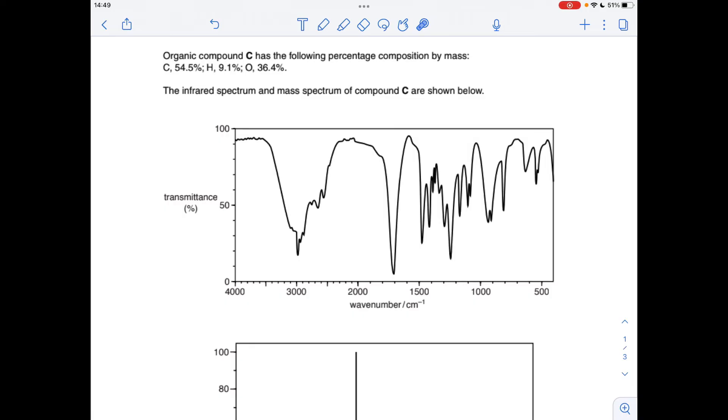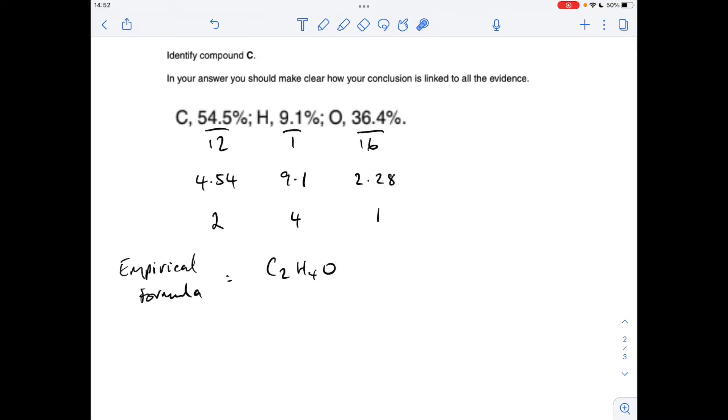Okay, so we'll make a start. First thing I'm going to do is calculate the empirical formula from the percentage composition by mass data, so that's given me an empirical formula of C2H4O.